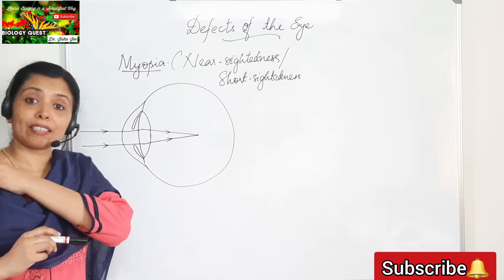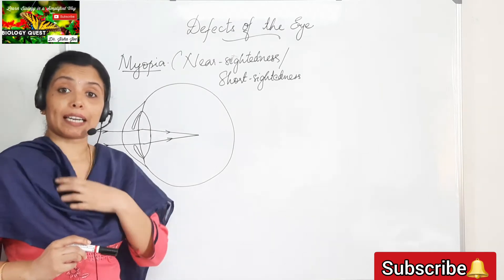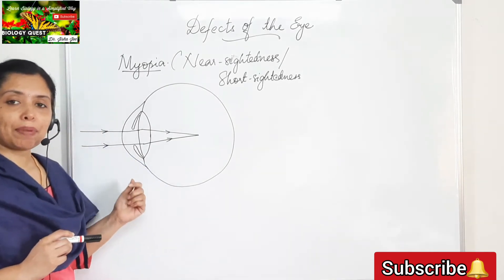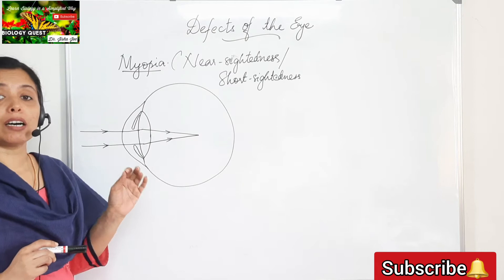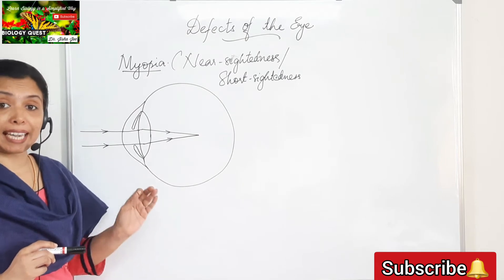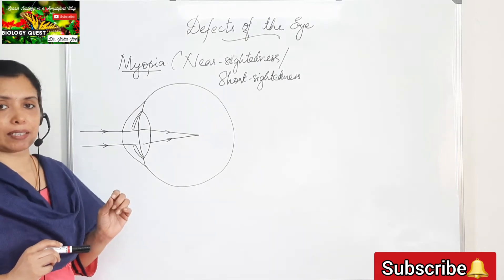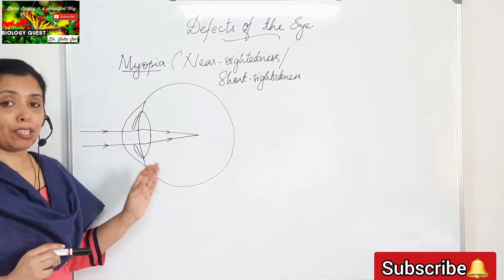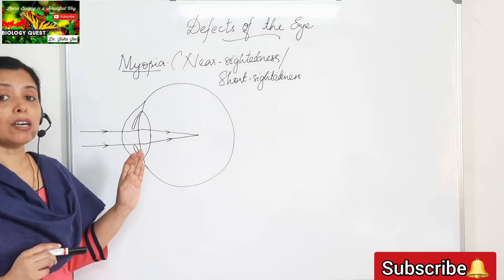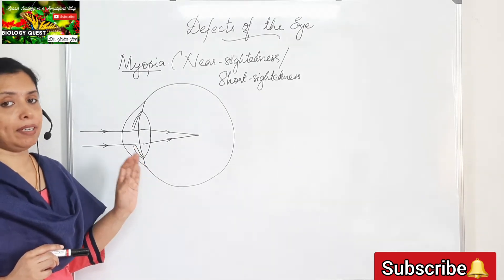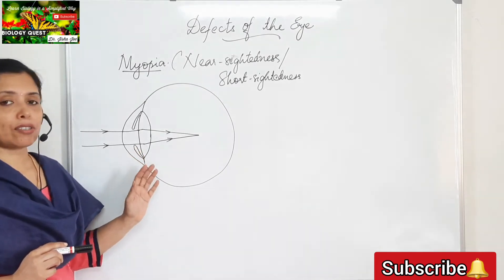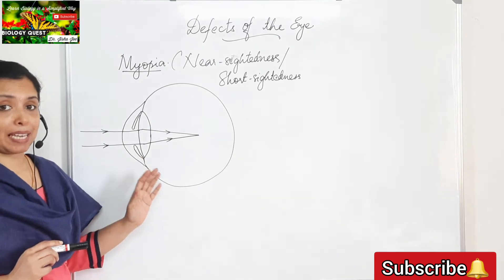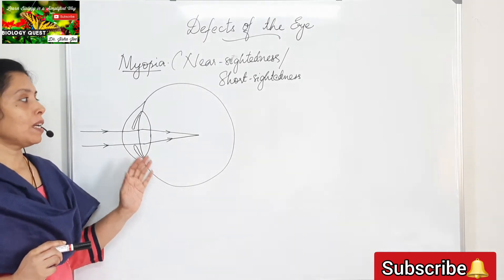How can this defect be corrected? This defect can be corrected by using a concave lens. This is normally asked as a diagram-based question in exams.